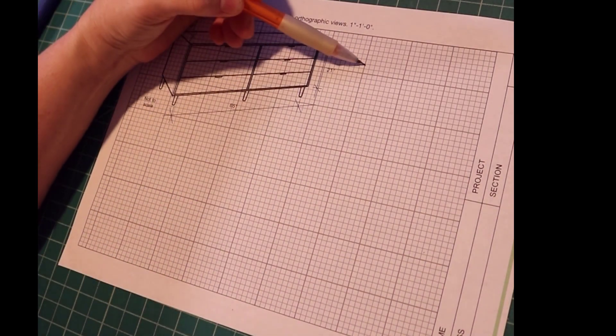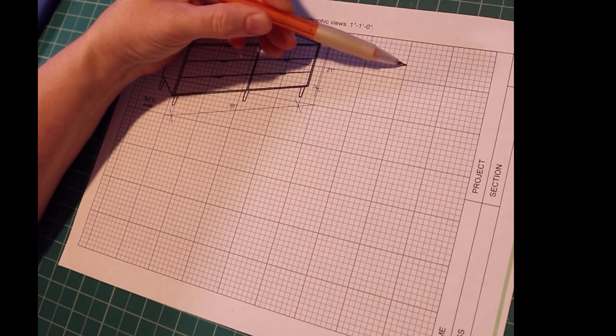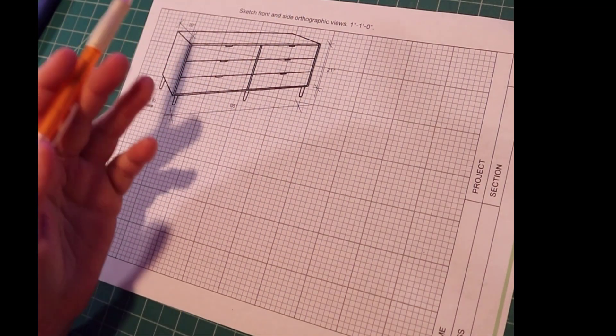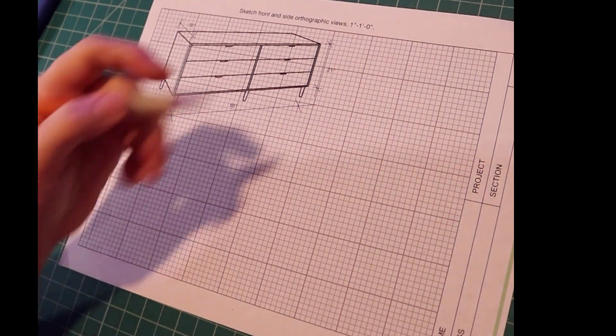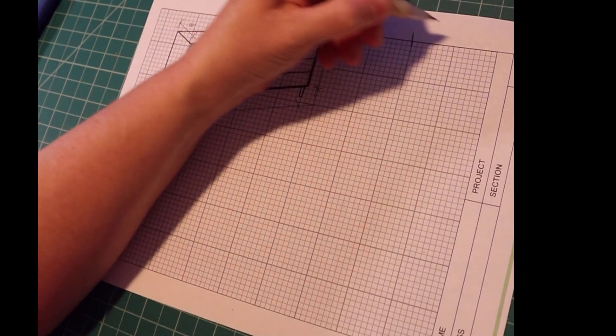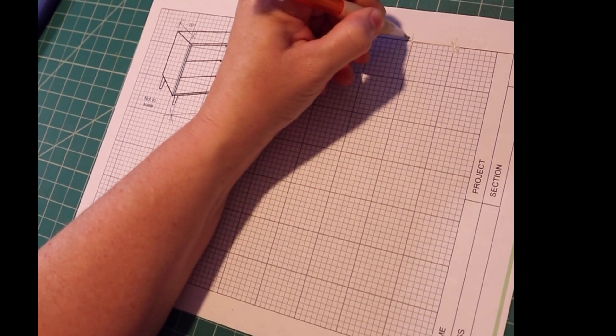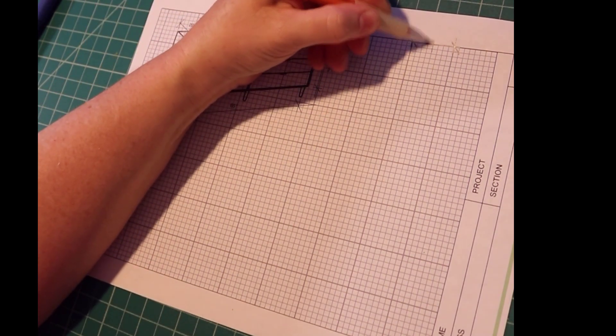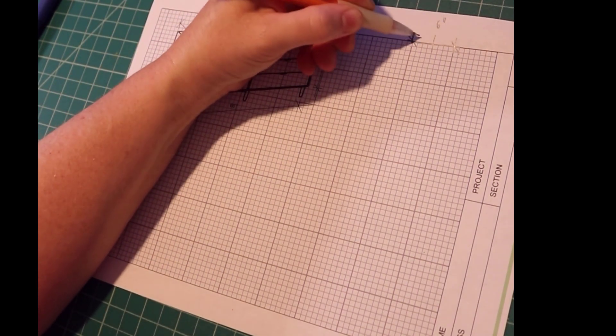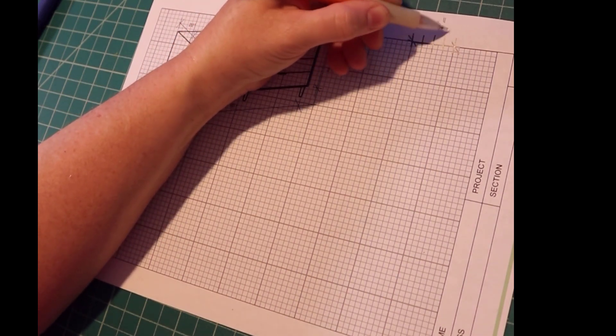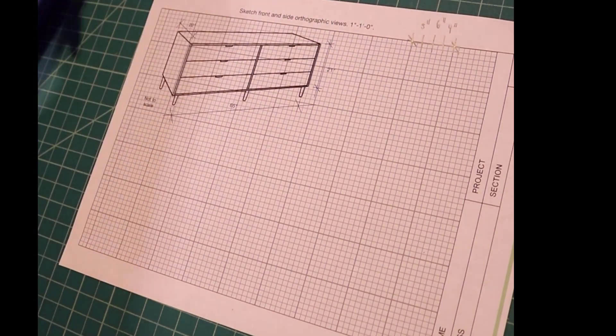That means every inch on this grid represents a foot, or 12 inches. So a way to look at this is, this is 12 inches, so right in the middle is 6 inches, here is 3 inches, and here is 9 inches.